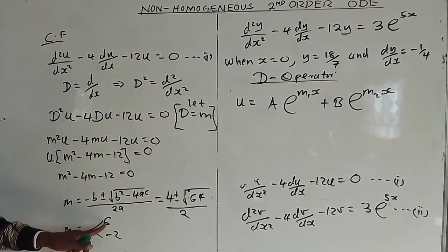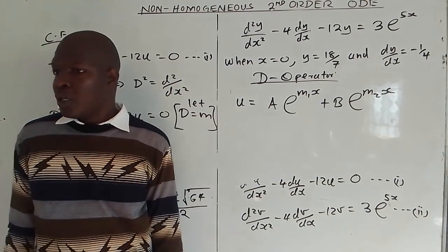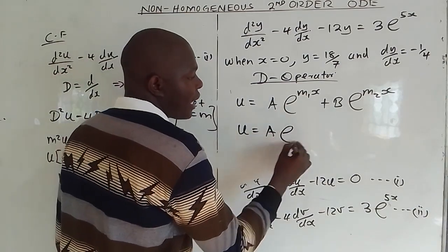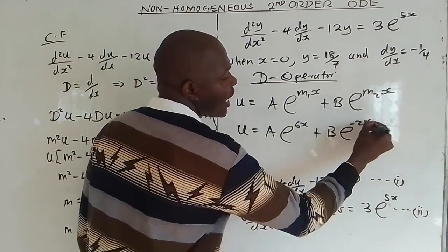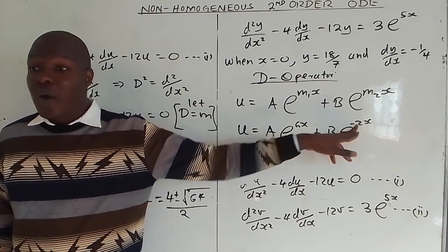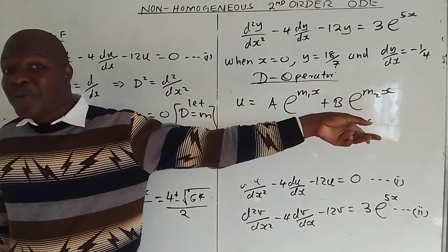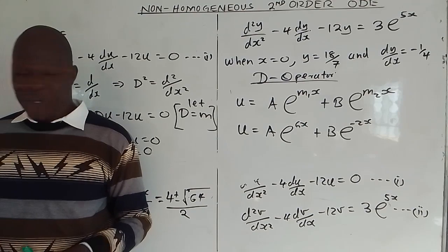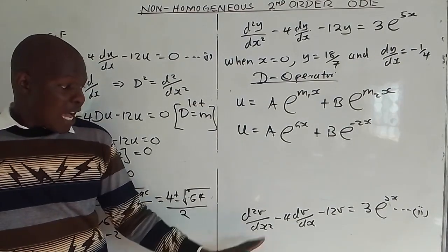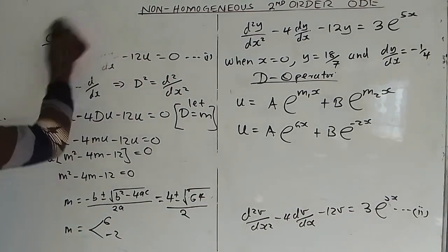We have found u, the complementary function: u = Ae^(6x) + Be^(−2x). Now we need to find v, the particular integral, by solving equation 2: d²v/dx² minus 4 dv/dx minus 12v = 3e^(5x). We choose v depending on the form of f(x). Since f(x) = 3e^(5x), our trial solution is v = Ke^(5x).